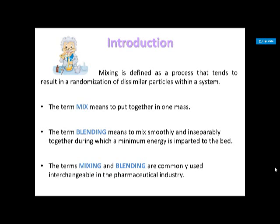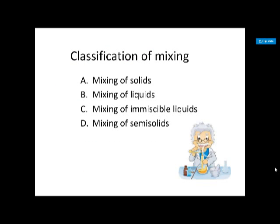Negative mixing needs continuous effort to keep the system in a mixed state — for example, suspensions and emulsions. Neutral mixing is a condition where neither mixing nor demixing occurs unless the system is acted upon by some external force. For example, in solid-solid mixing, force must be applied both for mixing and for demixing. These are the three basic types: positive, negative, and neutral mixing.